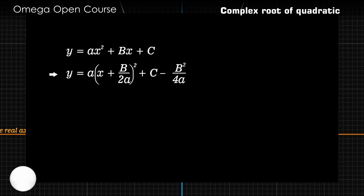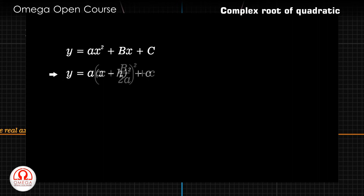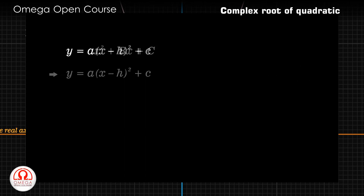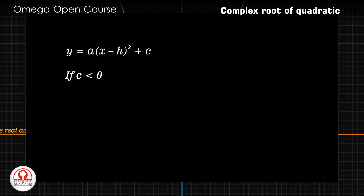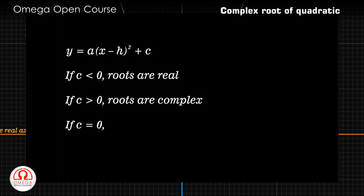This expression has complex roots only when c is greater than b²/4a. Let's write this term as a new constant c. Then a(x + b/2a)² can be written as a(x − h)² where h = −b/2a. Thus all quadratic expressions can be reduced to the form a(x − h)² + c. If c is negative, this equation has real roots; if it is positive, the roots are complex. If c is exactly 0, then the root is h, that is −b/2a.